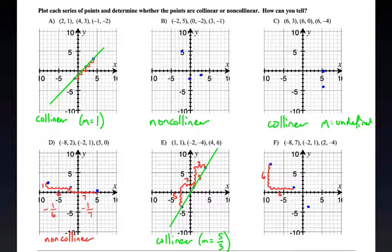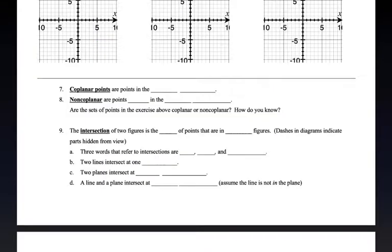Then F here goes down 6 to the right 6, down 5 to the right 4, that is not the same. 6 over 6 does not equal 5 over 4, so they're non-collinear. That is how we can answer those questions. Hopefully, that makes a little bit of sense. The slope part comes from algebra.